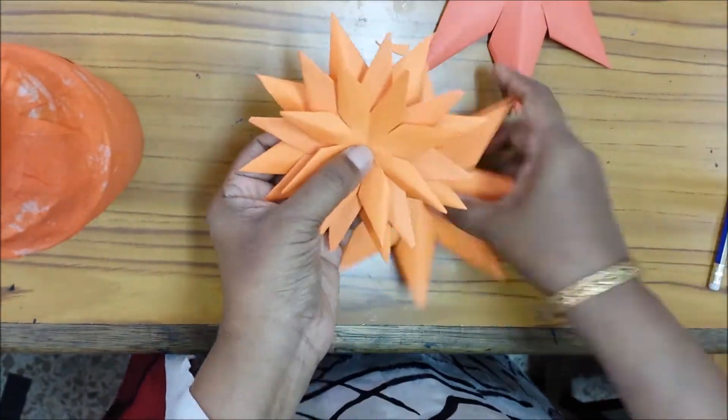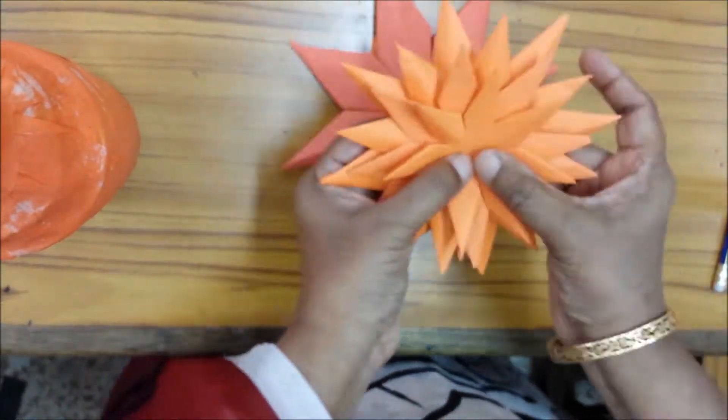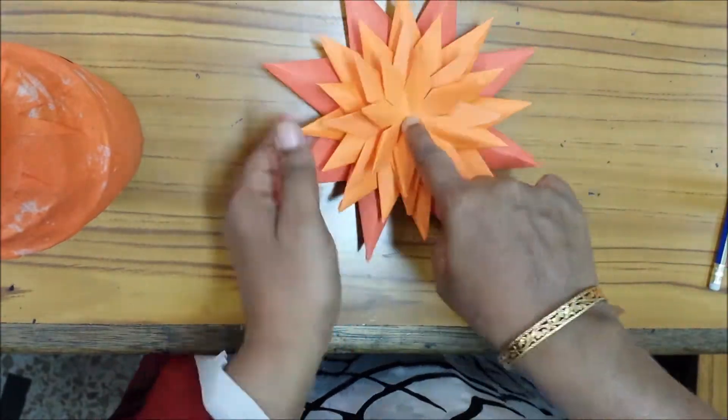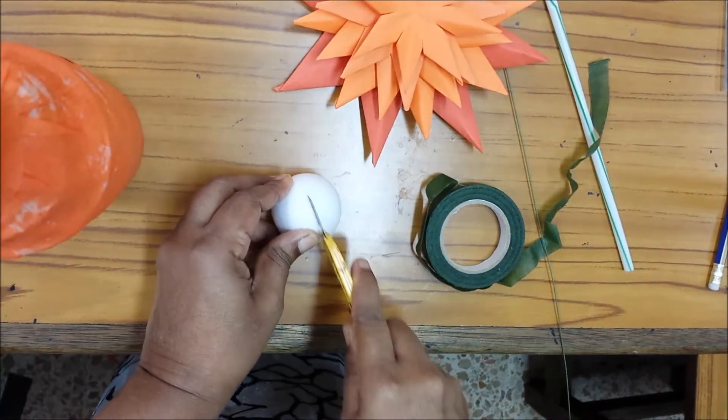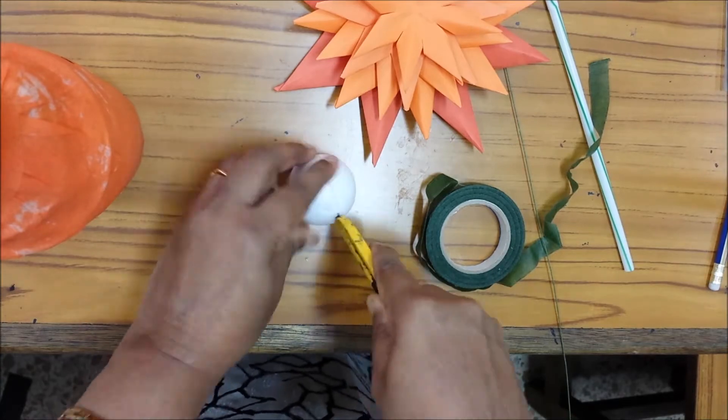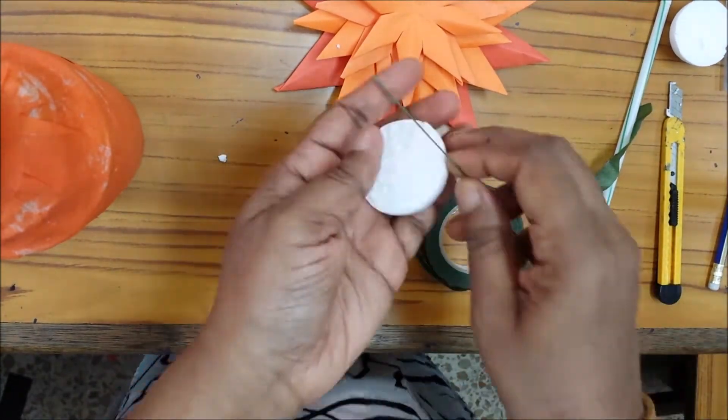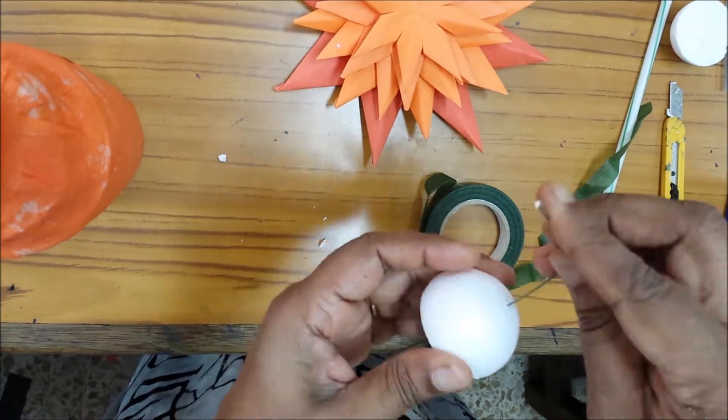one, that center, we have to prick it, make it a hole. For this one pollen, we are not using pollen. For that one we are using thermocol - cut it in two pieces.